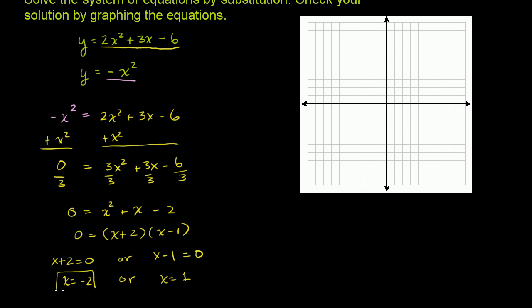So these are our two solutions: x equals negative 2, or x equals 1. Let's verify. When x equals negative 2, negative 2 squared is positive 4, and then you put a negative there, so it's negative 4. So the point is negative 2, negative 4. When x equals 1, 1 squared is 1, and then negative gives negative 1. So it's 1, negative 1. These are both points on the first equation.